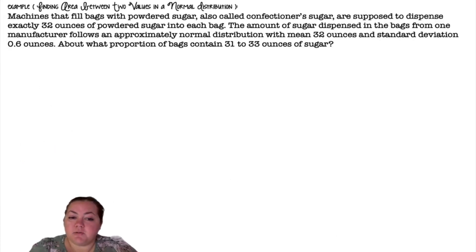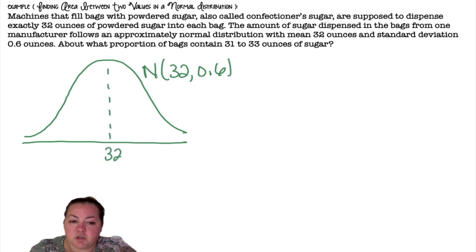Finding the area between two values in a normal distribution. Machines that fill bags with powdered sugar are supposed to dispense exactly 32 ounces. We dealt with this problem before and the standard deviation was 0.6. About what proportion of bags contain 31 to 33 ounces of sugar? So here's my normal distribution. 32 is in the center, so we're between 31 and 33 and I want that area in between. I want to find what percent is shaded.